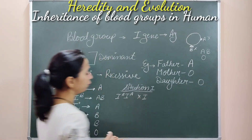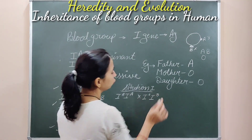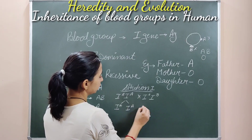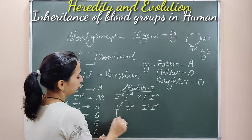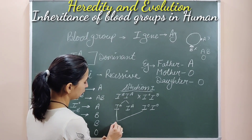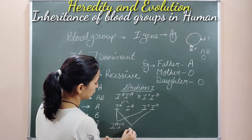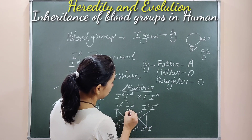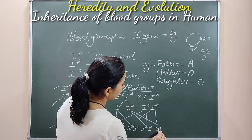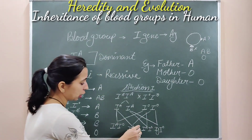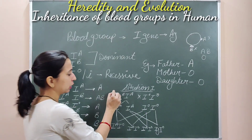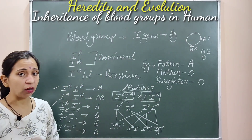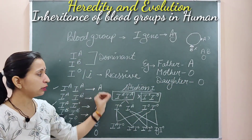In situation one, if father (Ia-Ia) crosses with mother (Io-Io), all possible progeny combinations are Ia-Io. So all progenies will have the A blood group. But in our question, the daughter has O blood group, which means this situation is not possible. The father cannot be homozygous dominant.